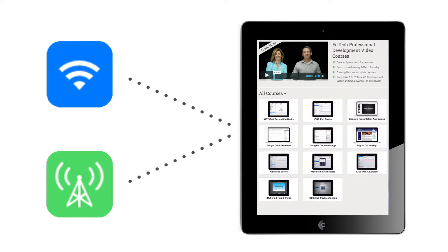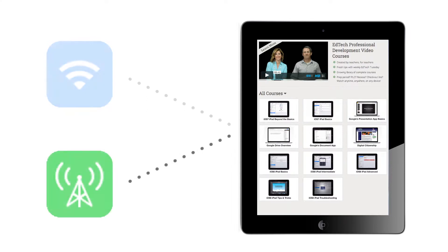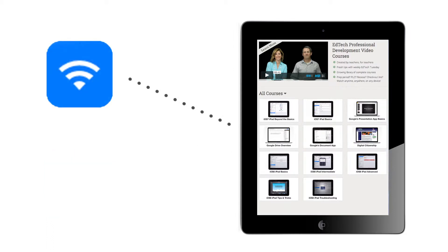Most of you are going to use a wireless internet connection, which is also called a Wi-Fi connection. Fewer of you will have the option to connect to the internet using cellular data. This requires a monthly subscription, much like a cell phone. We will focus on using Wi-Fi since most of you will only have that option to connect to the internet.